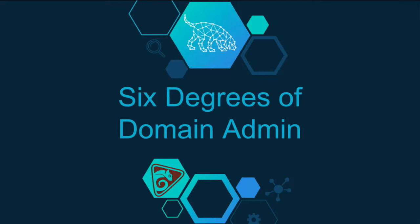If you're not familiar with this phrase, there's a very common game in the film geek world called six degrees of Kevin Bacon where you can take any actor, any director, any movie and just by making six connections, you can find a way to go to Kevin Bacon. We have found a way to do that in an Active Directory environment, and domain admin is the most obvious target.